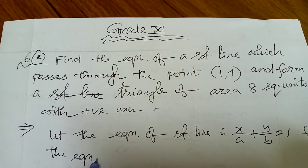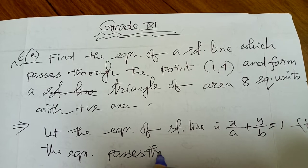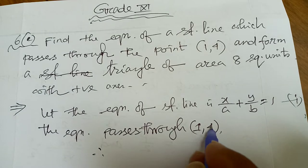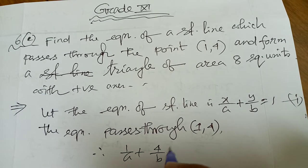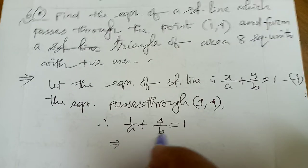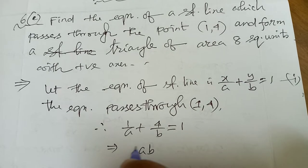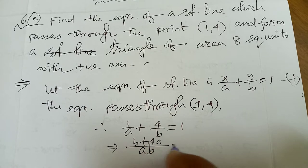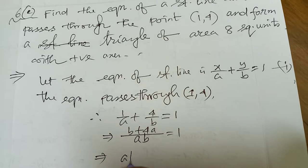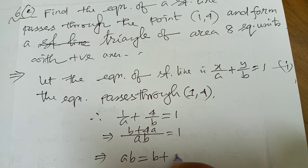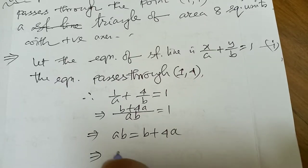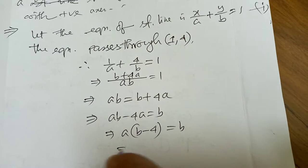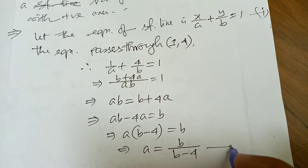The equation passes through point (1, 4), so substituting: 1/a + 4/b = 1. Taking lcm as ab: b + 4a = ab, so ab − 4a = b, giving a(b − 4) = b. Therefore a = b/(b − 4) — this is equation number 2.